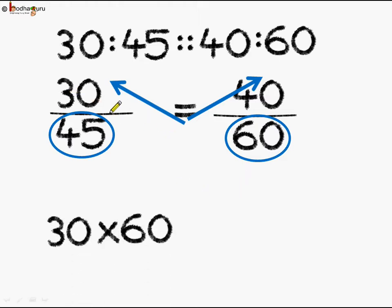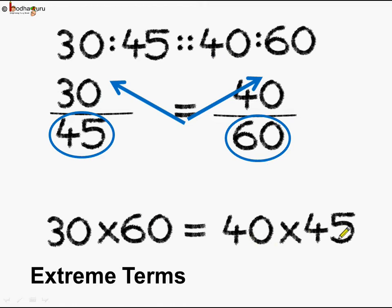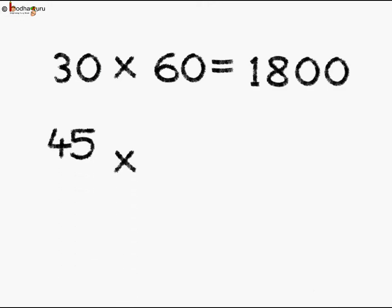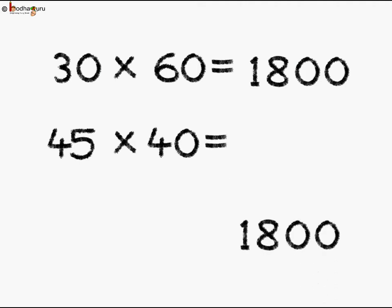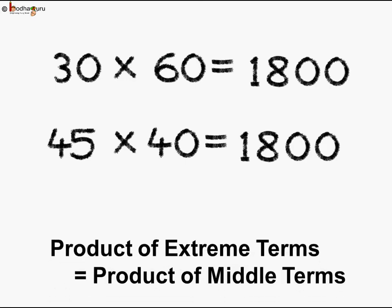So we get: 30 multiplied by 60 is equal to 40 multiplied by 45. Here 30 and 60 are the extreme terms, and 45 and 40 are the middle terms or the means in the statement of proportion. Let us verify: 30 multiplied by 60 is equal to 1800, and 45 multiplied by 40 is also equal to 1800.